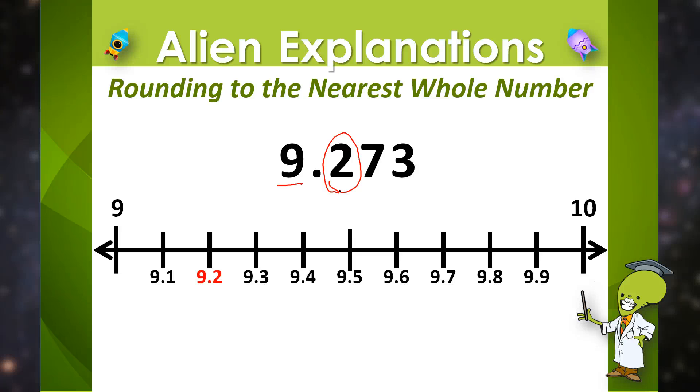we could clearly see that 9 and 273 thousandths would round down to 9 because its location on the number line is much closer to 9 than it is to 10. So 9 and 273 thousandths rounded to the nearest whole number would be 9. Thank you.